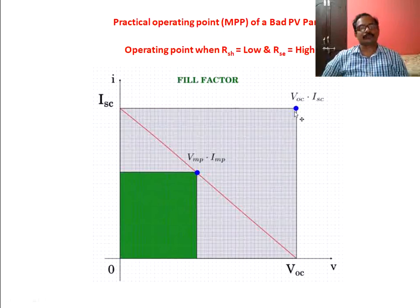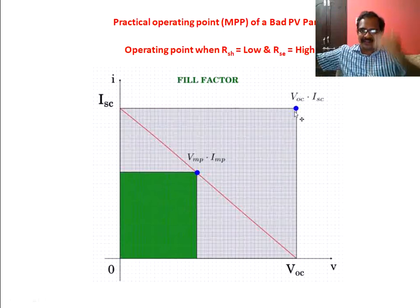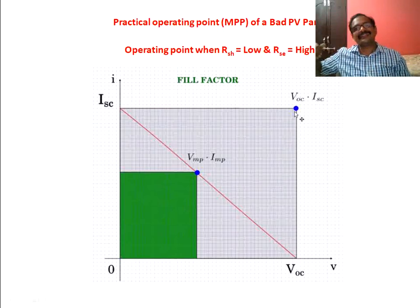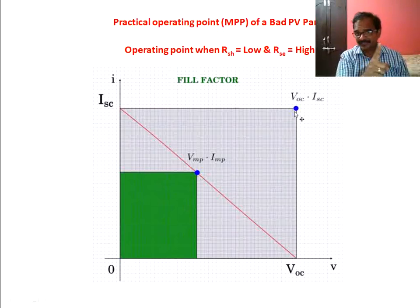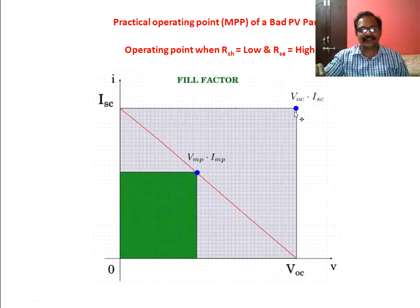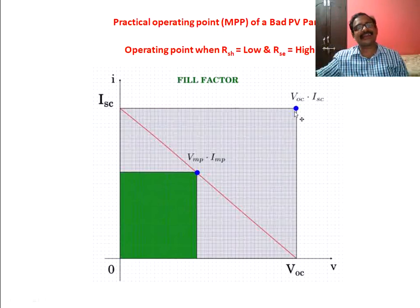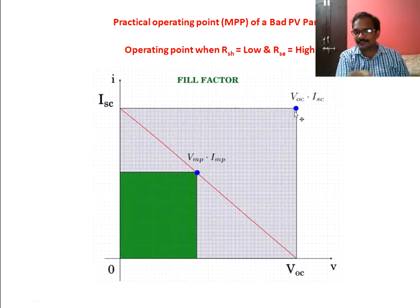If RSH is decreasing and RSE is increasing, we get worst characteristics — this red color line is the bad solar panel characteristics. The gray area is very high and the green area is very small. The ratio of green area to gray area is nothing but the fill factor of a solar panel, which will be very very less. This represents a bad solar cell.